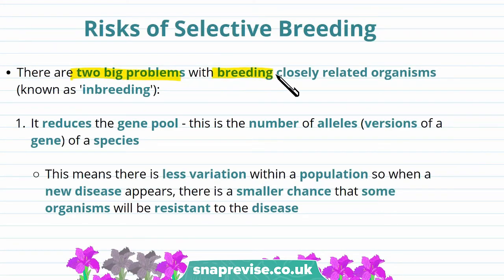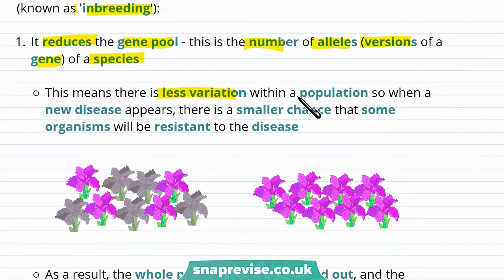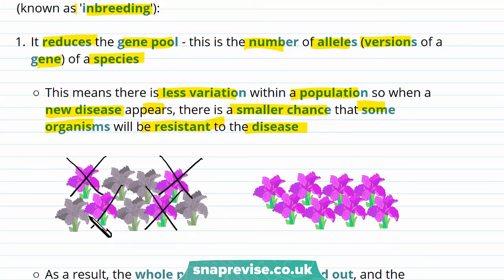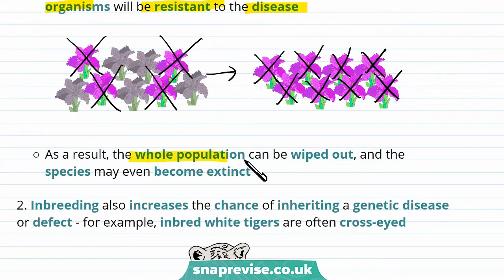However, there are two big problems with breeding closely related organisms, known as inbreeding. One problem is that inbreeding reduces the gene pool — the number of alleles or versions of a gene of a species — meaning there is less variation within a population. So when a new disease appears, there's a smaller chance that some organisms will be resistant. For example, if only the purple flowers are affected by a disease and all flowers are purple, the disease wipes them all out and the whole population — or even the species — may become extinct.